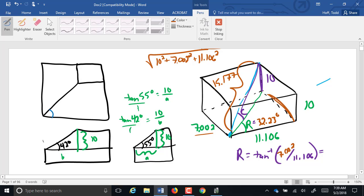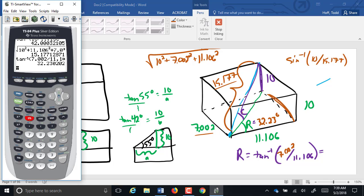We get 12.23, so we got 15.177 there. So then C is going to be the inverse sine of 10 over 15.177, which equals 41.22 degrees.